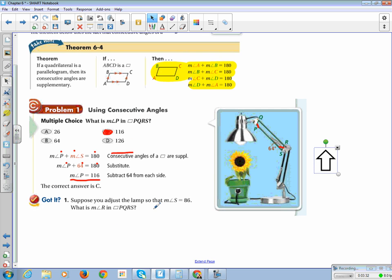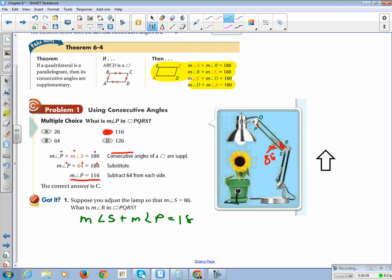Now let's look at our practice problem. Suppose that you adjust the lamp so angle S is now 86. What is angle R in parallelogram PQRS? We're going to do the same thing. The measure of angle S plus the measure of angle P equals 180. Measure of angle S is 86. We subtract 86 from both sides, and you get the measure of angle P is 180 minus 80 is 100, and 100 minus 6 is 94 degrees.